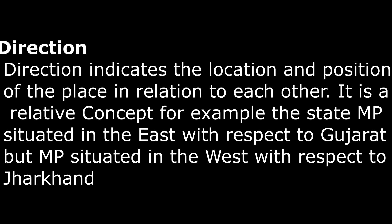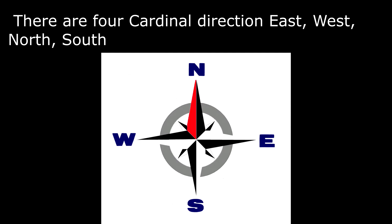Now about direction. Direction indicates the location and position of places in relation to each other. It is a relative concept. For example, the state MP is situated in the east with respect to Gujarat, and MP is situated in the west with respect to Jharkhand. There are four cardinal directions: